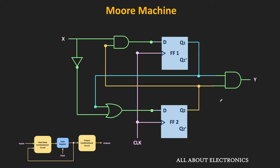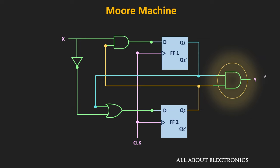Typically, we can also have the combinational logic at the output side which will generate the final output. For example, in this case we have an AND gate at the output side, and the output of these two flip-flops are connected to this AND gate. That means the output of this AND gate will represent the output of the overall circuit. In this case the output of the circuit depends only on the present state of the flip-flops, and that is why this circuit is an example of the Moore machine.